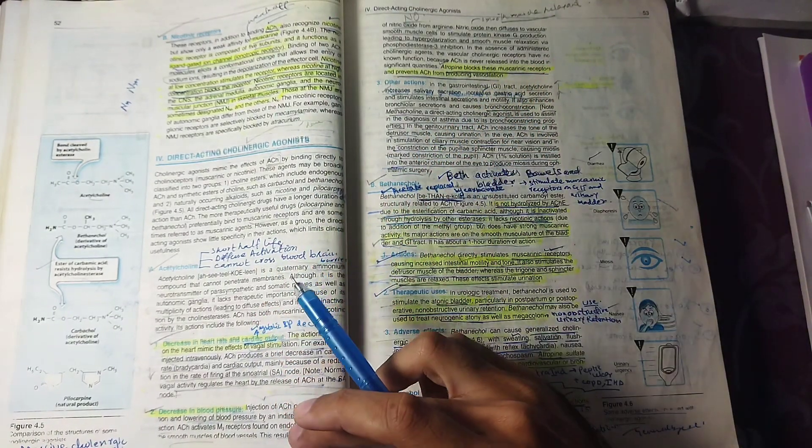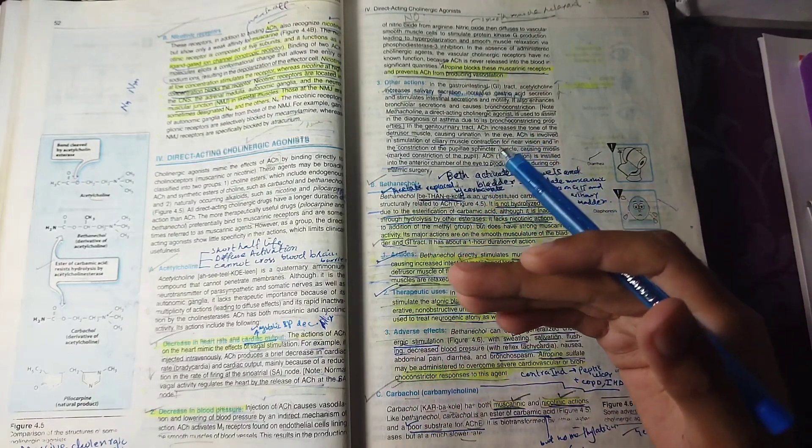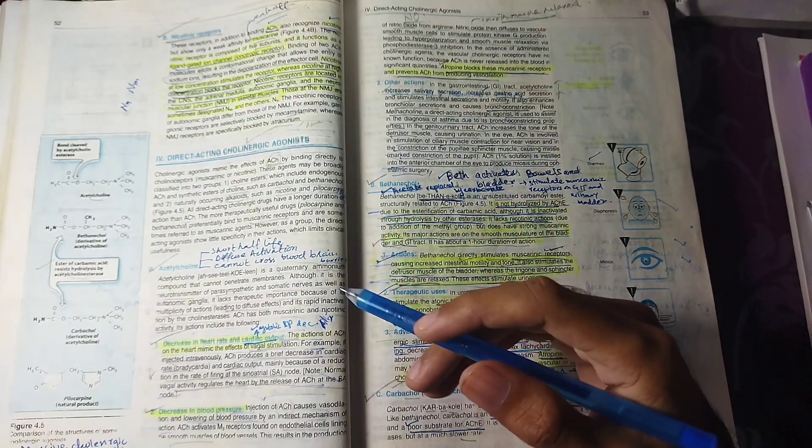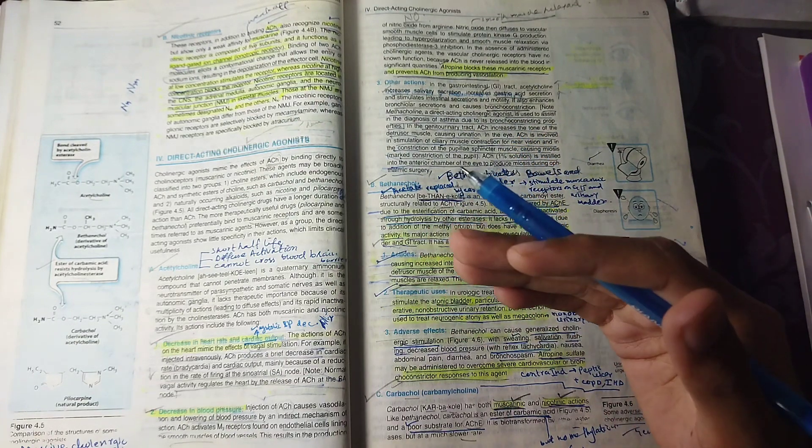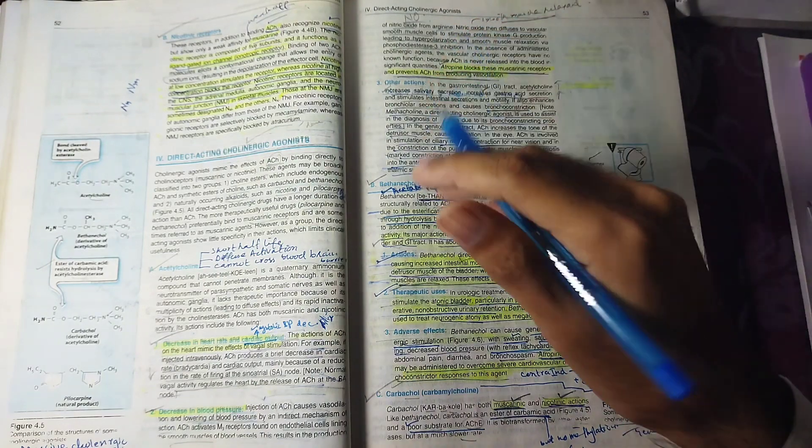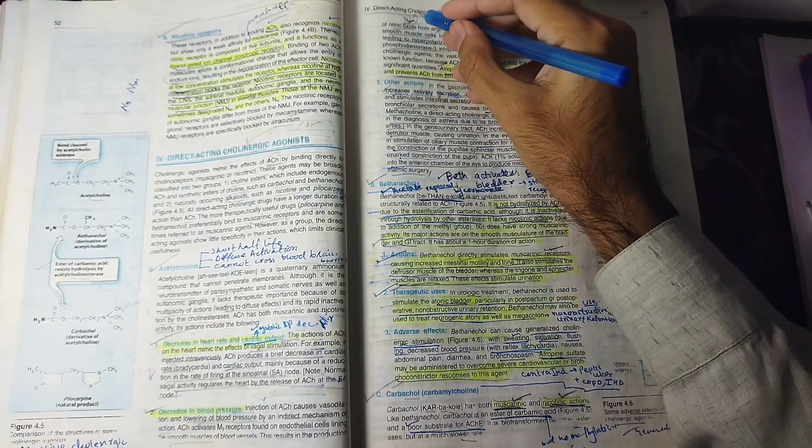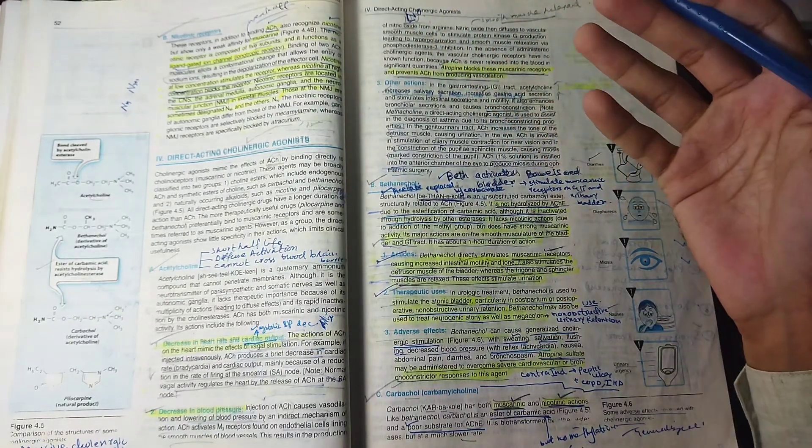Blood pressure will reduce because blood vessels have M3 receptors on the endothelium. When M3 receptors are activated, they are Gq-coupled receptors, and this leads to nitric oxide release in blood vessels. Nitric oxide is a smooth muscle relaxant.